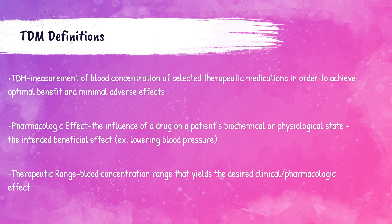Therapeutic drug monitoring, or TDM, is when a patient's blood is tested to get a measurement of a specific therapeutic medication. These concentrations allow the physician to ensure that the patient is getting the correct dosing of the medication in order to have the greatest benefit and the least number of adverse effects of the drug. TDM tests are regularly done in a laboratory, and it's critical for medical laboratory professionals to understand why TDM testing is important, as well as the therapeutic drug's purpose for the patient.